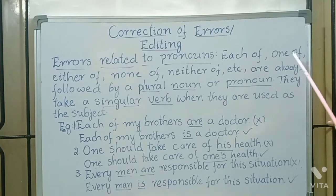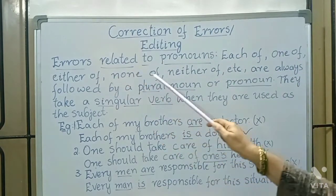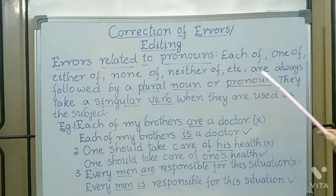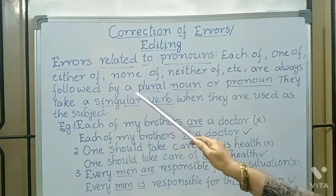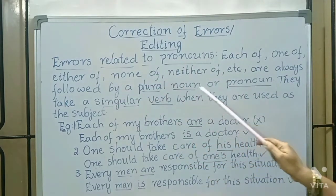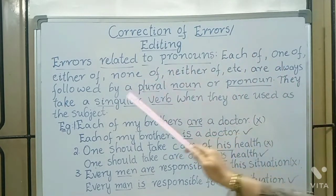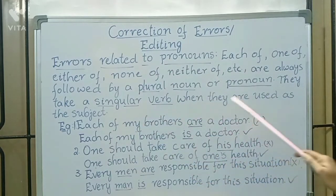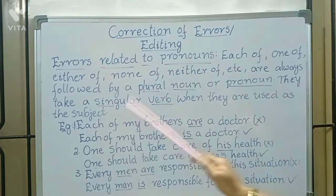Each of, one of, either of, none of, neither of, etc. are always followed by a plural noun or pronoun. They take a singular verb when they are used as the subject.